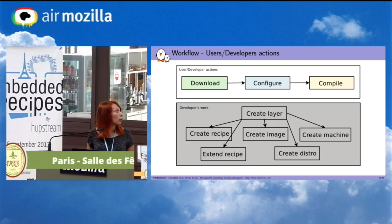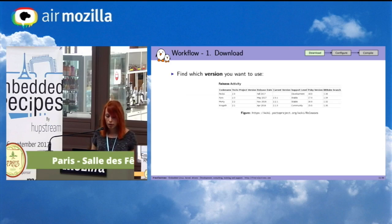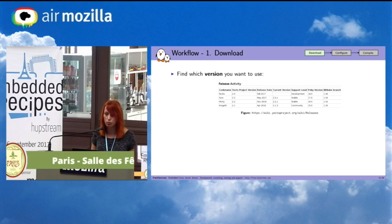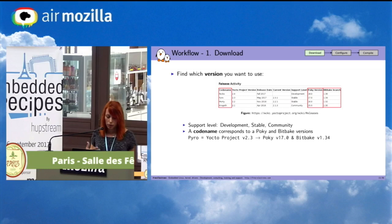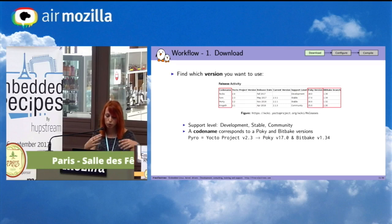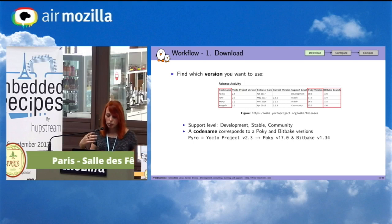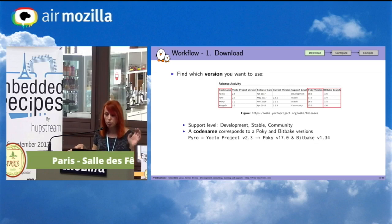First of all, we will look at the different actions we can do with Poky. First we need to download it, and we need to know which version to use. There is a website that indicates all the different releases of the Yocto project. There is an important piece of information: the support level. We have development, stable, and community levels. Then there is the codename that corresponds to a Poky and BitBake version. The Yocto project guarantees that using this codename you will have a Poky and BitBake version that will work together.